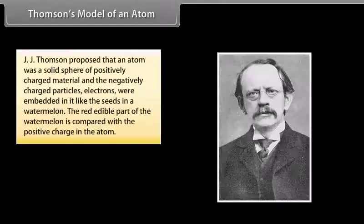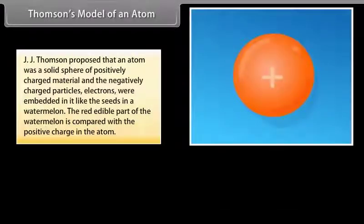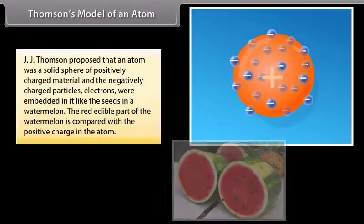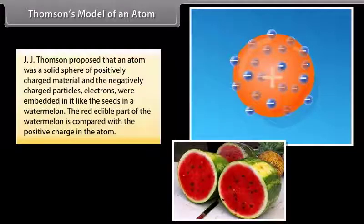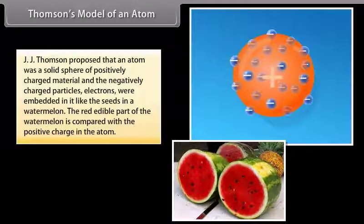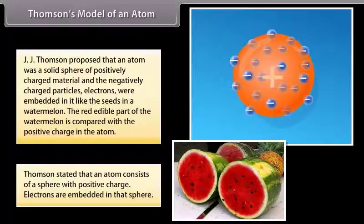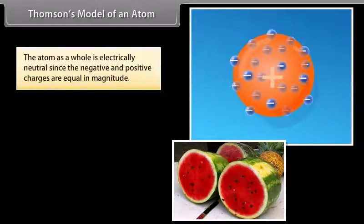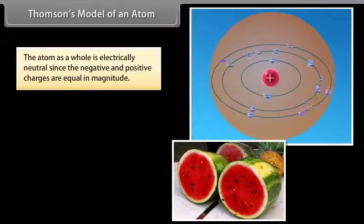J.J. Thomson proposed that an atom was a solid sphere of positively charged material, and the negatively charged particles — electrons — were embedded in it like the seeds in a watermelon. The red edible part of the watermelon is compared with the positive charge in the atom. Thomson stated that an atom consists of a sphere with positive charge, with electrons embedded in that sphere. The atom, as a whole, is electrically neutral since the negative and positive charges are equal in magnitude.